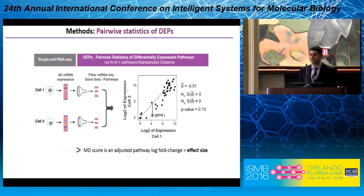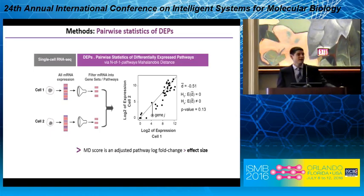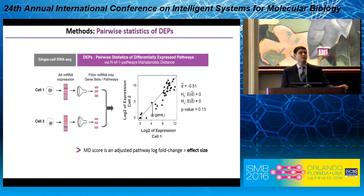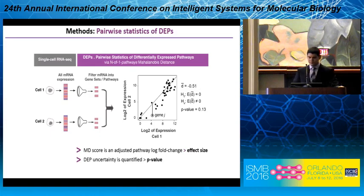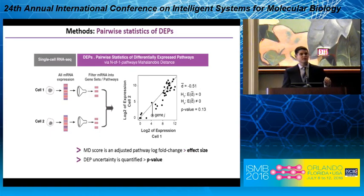Further, we construct a hypothesis test of whether the expected value of this MD score is different from zero. This quantifies the uncertainty of whether a pathway has strong evidence of being differentially expressed. So you get two statistics for each pair of cells: an effect size and a p-value.